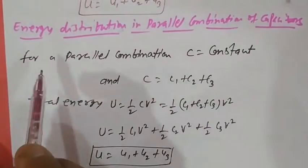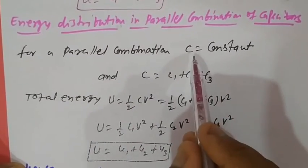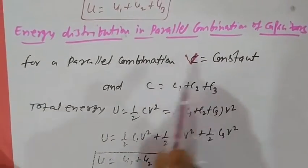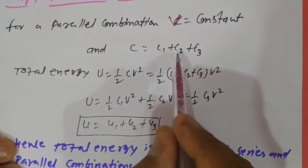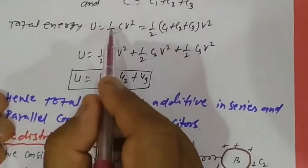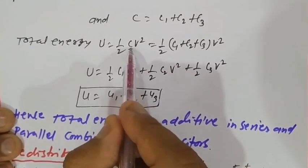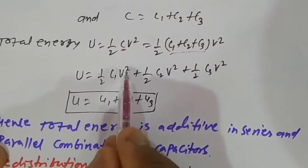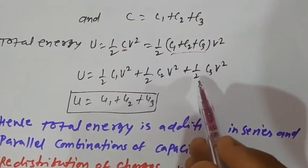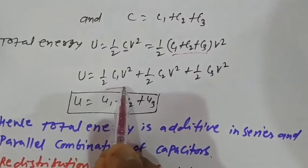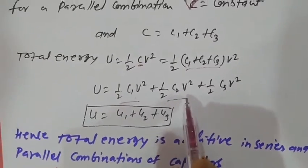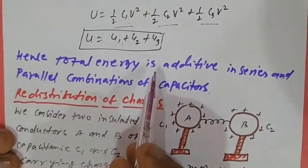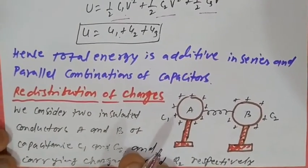For a parallel combination of capacitors, voltage V is constant and equivalent capacitance C = C1 + C2 + C3. Total energy U = (1/2)C1V² + (1/2)C2V² + (1/2)C3V², which equals energy of capacitor 1 plus energy of capacitor 2 plus energy of capacitor 3, so U = U1 + U2 + U3. Hence total energy is additive in both series and parallel combinations of capacitors.